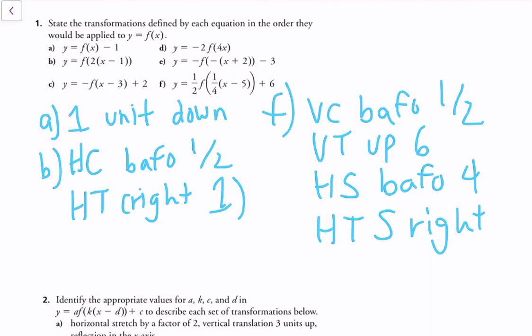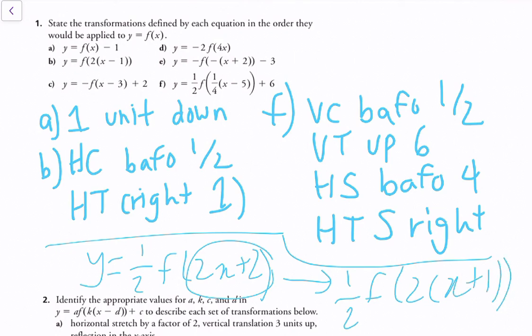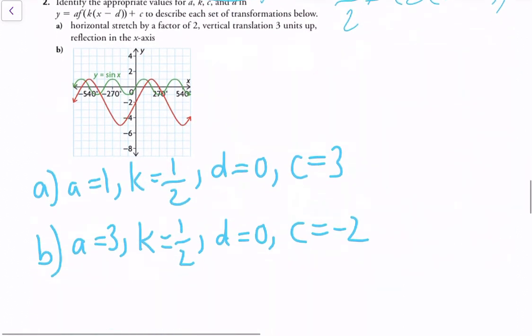One last important thing to remember for horizontal stretches or compressions: you need to first factor out any values. For example, if I had y equals one-half times f of 2x plus 2, the first thing I need to do is factor this out to get one-half times f of 2 times the quantity x plus 1. I need to do that in order to properly apply my horizontal stretches, compressions, and translations.